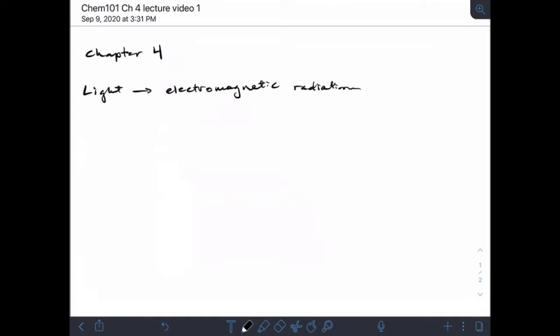Chapter 4: we're going to start talking about light, and this is one of my favorite topics in all of chemistry because it really tickles my nerdy side. Light is also referred to as electromagnetic radiation. The other thing that's really cool about light is that it travels at constant speed.